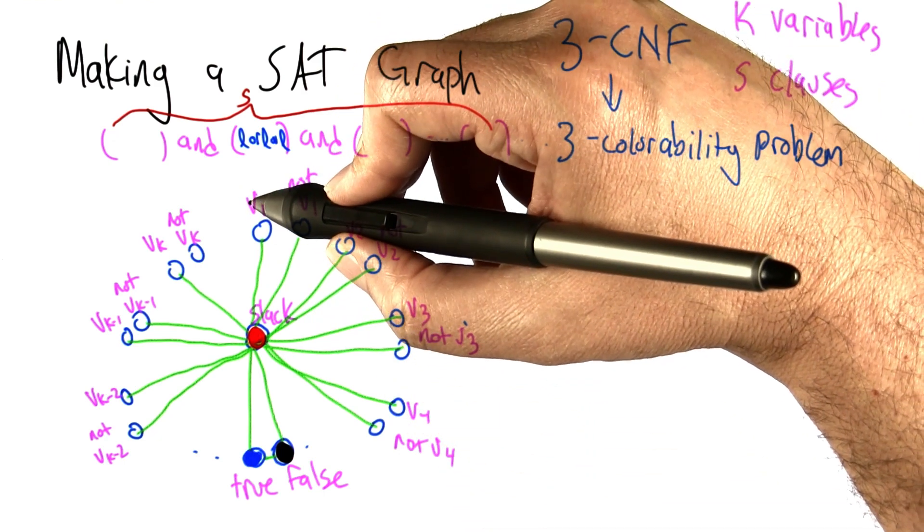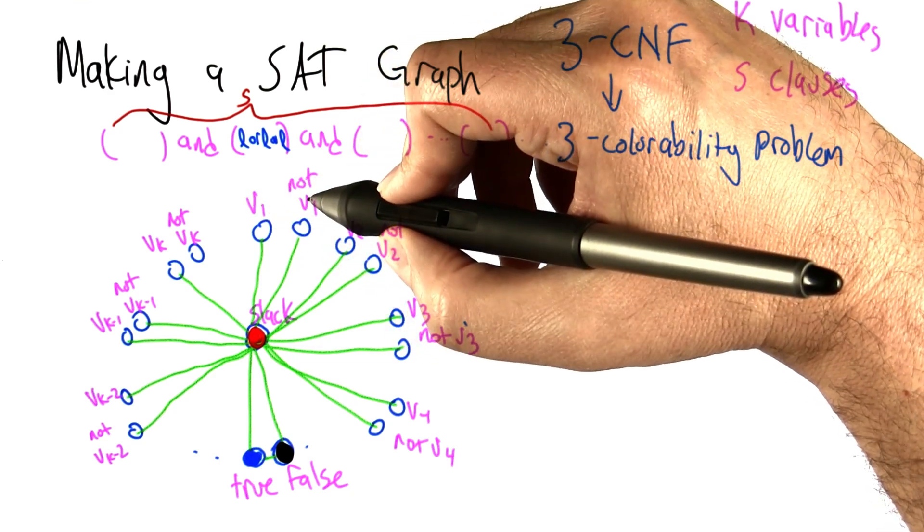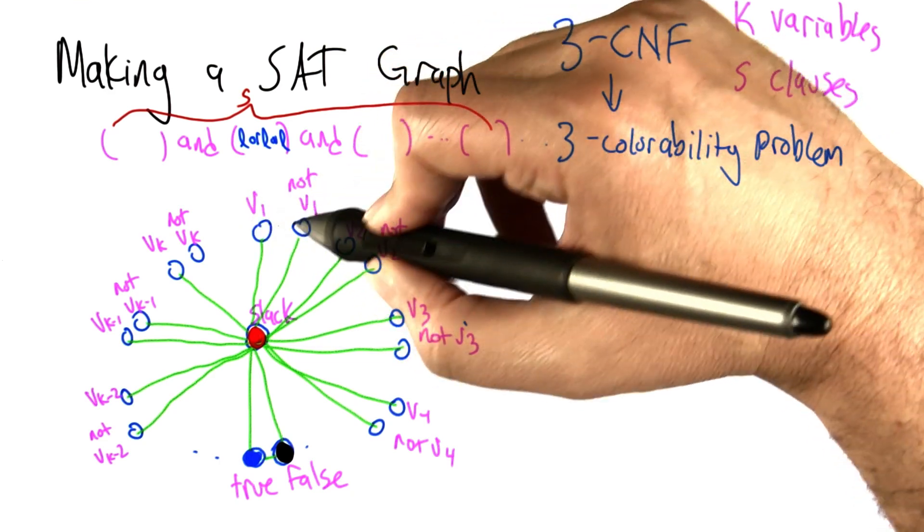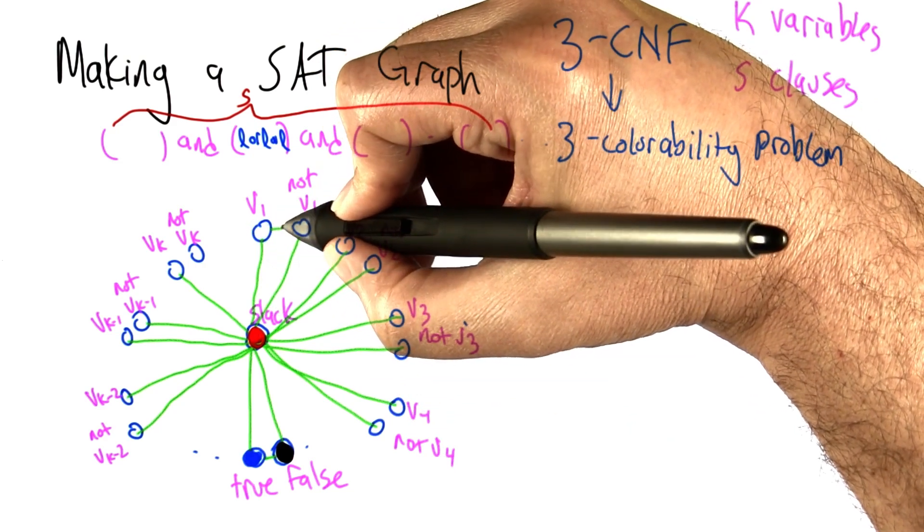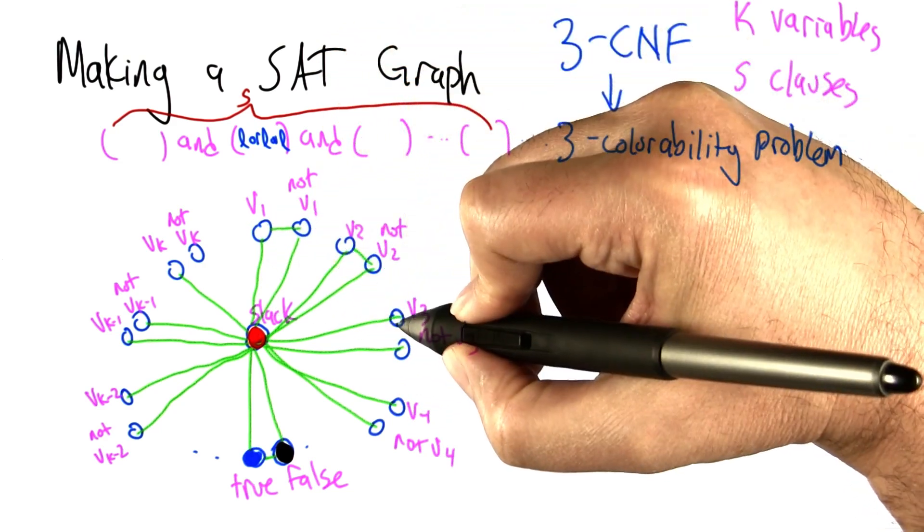We have to be a little careful though because literal v1 and literal not v1 can't both be true, and they can't both be false. But that's an easy thing to fix in a graph colorability problem. We just connect them with an edge.